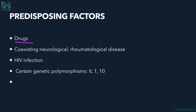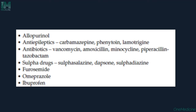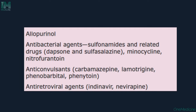Predisposing factors include drugs, coexisting neurological or rheumatological disease, HIV co-infection, and genetic polymorphisms involving interleukin-1 and -10. The most common causative drugs can be remembered as the '5 A's': Allopurinol, Antibiotics (vancomycin, amoxicillin, minocycline, piperacillin-tazobactam, sulfonamides), Anti-epileptics (carbamazepine, phenytoin, lamotrigine, phenobarbital), Antiretrovirals (indinavir, nevirapine), and Antifungals (terbinafine).